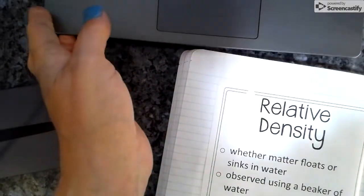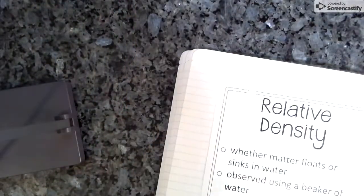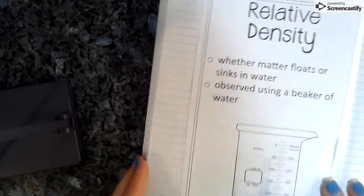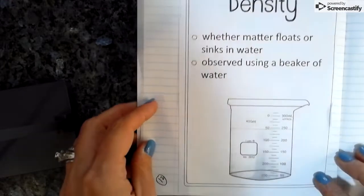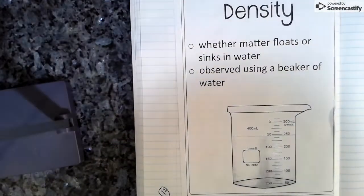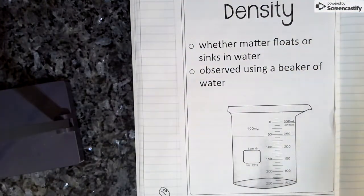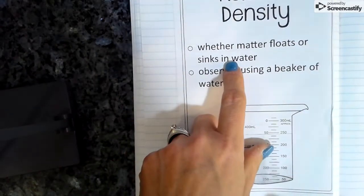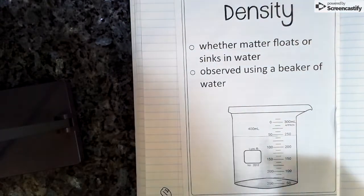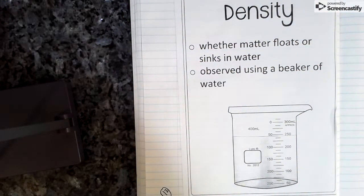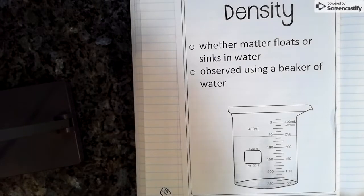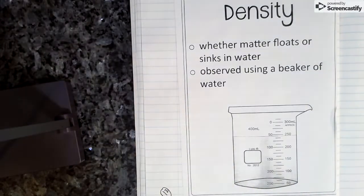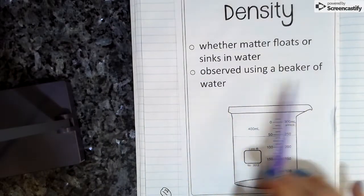All right, today we're going to talk about relative density and solubility. So on this page in your journal, you should have the relative density page that looks like this. And a couple of notes I want you to know is that whether matter floats or sinks in water is what determines its relative density. If something sinks or something floats, that's how you know what its relative density is. And you observe it using a beaker of water.